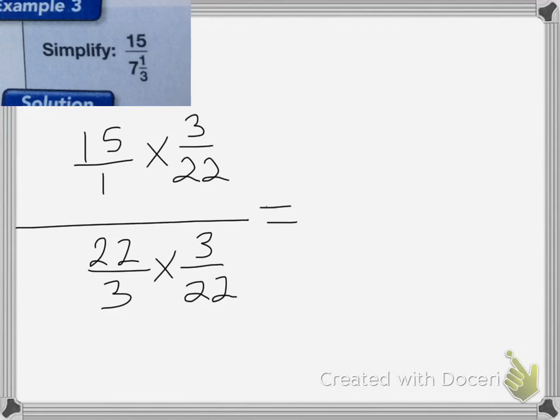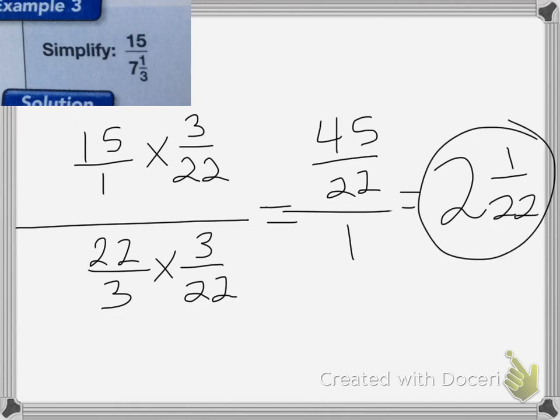And that's going to equal 45 over 22, and all of that over 1, which is equal to 2 and 1 twenty-second if I change it back to a mixed number.